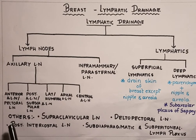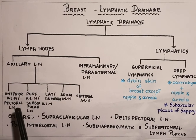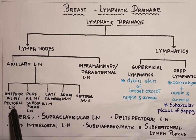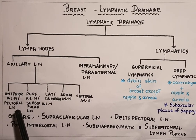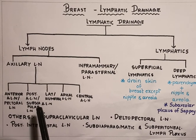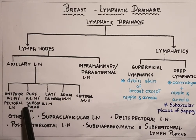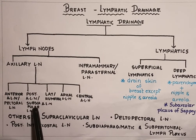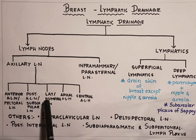The anterior or pectoral group of axillary lymph nodes are situated deep to the lower border of the pectoralis minor muscle. The posterior or subscapular group of axillary lymph nodes are situated inferior to the lower border of the subscapularis muscle.